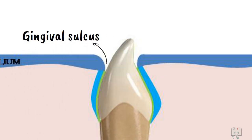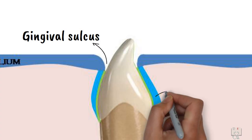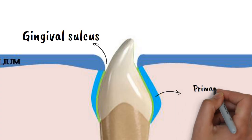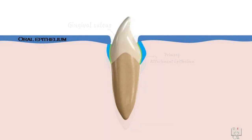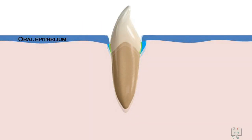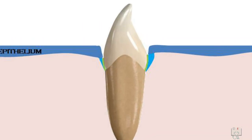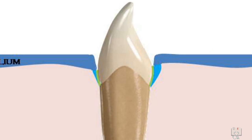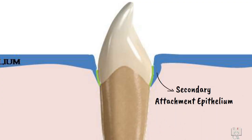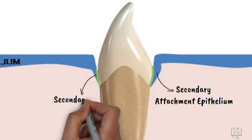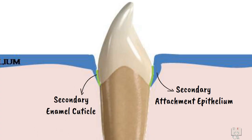Once the tooth breaches the gingiva, the reduced enamel epithelium is called primary attachment epithelium, which as the tooth continues to erupt gets shorter and shorter. The cells of the reduced enamel epithelium in the primary attachment epithelium are gradually replaced by cells from the sulcular epithelium, after which it is called secondary attachment epithelium. Moreover, the primary enamel cuticle is now called the secondary enamel cuticle.